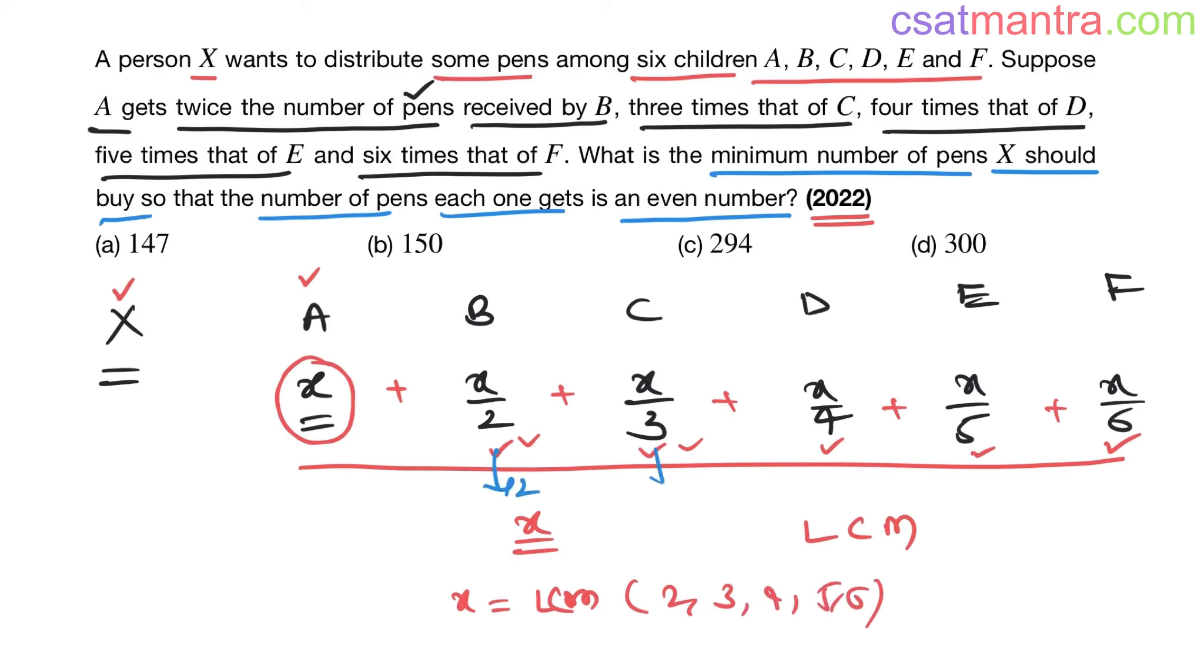2, you can write 2. 3, you can write 3. 4, 2 square. 5, 5. 6, 2 into 3 LCM. Maximum power of 2, 2 square. Maximum power of 3, 3 power 1. Maximum power of 5, 5. 4, 5 is 20, 23 is 60.